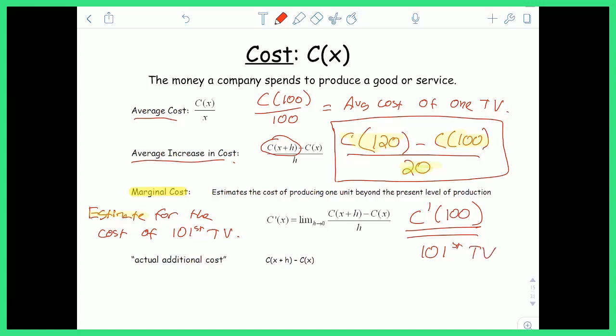So by plugging 100 into the derivative, you're measuring the rate of change after 100, which is going to be the 101st television. So if you plug 100 into the derivative, you're getting an approximation for that 101st television. If you plug 200 in the derivative, you're getting an approximation for that 201st television, so on and so forth.